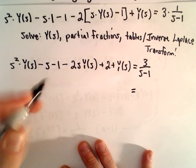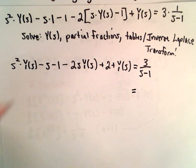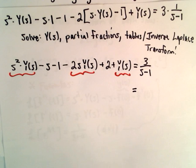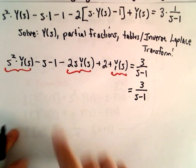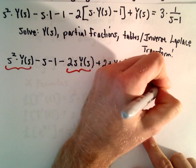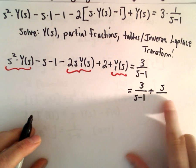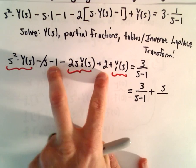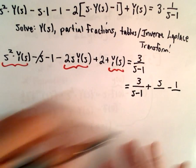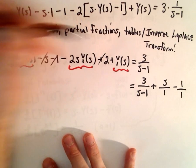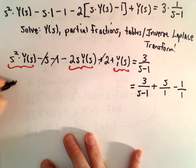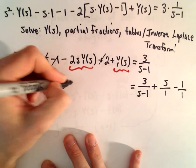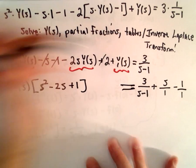I'm going to solve for Y of s by leaving all the terms involving Y of s on the left side. We've got 3 over s minus 1 on the right. We can add s over, and doing a couple steps at once I'll get common denominators. Negative 1 plus 2 gives us positive 1, so we would have to subtract 1. Notice if we factor Y of s out on the left side, we would have s squared minus 2s plus 1.